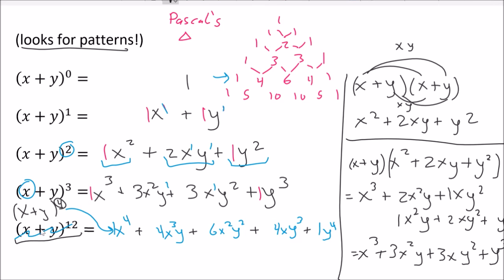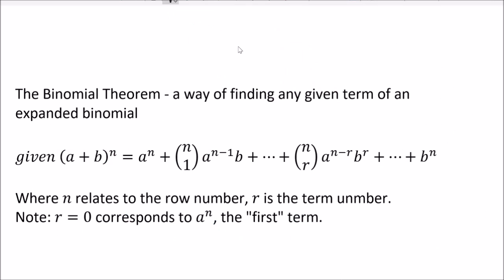I'm not going to put us through expanding to the 12th row, but that pattern would work all the way down. If we had to do something like x plus y to the 12th, there's a faster way — and that comes from the binomial theorem. It's a way of finding any given term of any expanded binomial. Even if the exponent is 27, we can quickly find any term we want. This is attributed to Sir Isaac Newton.